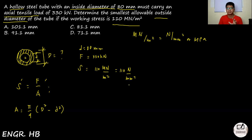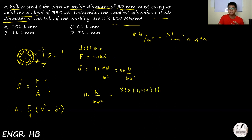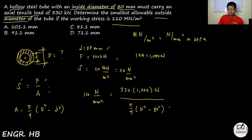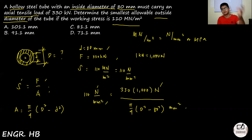Everything is set for direct substitution. The stress is 110 N/mm², equal to F divided by A. Convert F: 330 kN × 1,000 = 330,000 N. The area is π/4 × (D² − 80²). Units work out: N on top, mm² on bottom, so the answer will be in mm, matching the choices.